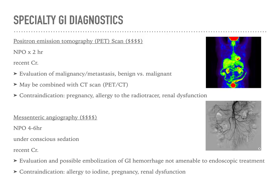Moving on to specialty diagnostics in the gastrointestinal system: PET scans highlight specific areas and provide information about malignancies or metastasis, differentiating between benign and malignant tumors. Contraindications include pregnant women or anyone with allergies to the radioactive isotope. Mesenteric angiography allows us to look at blood flow to the gut and throughout the abdomen.